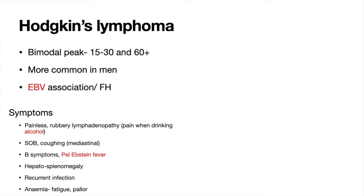Because white cells may not function properly and the white cell count is low, there is an increased risk of infections. If the lymphoma spreads to the bone marrow — the production site of red blood cells — it may reduce hemoglobin and cause anemia. The patient may therefore tire more easily, feel pale, and experience shortness of breath.